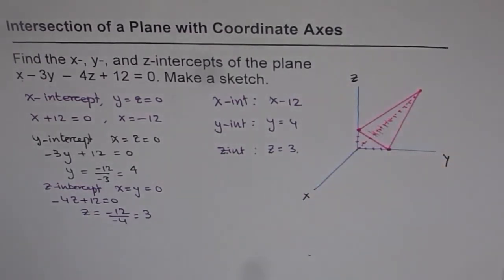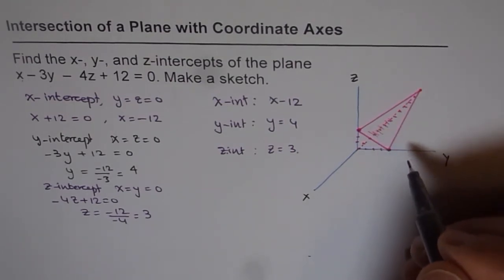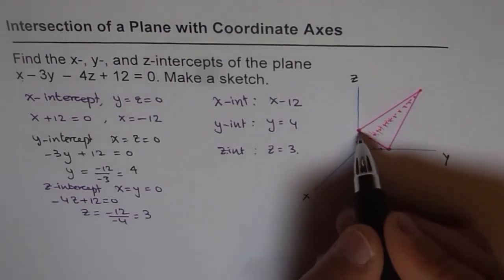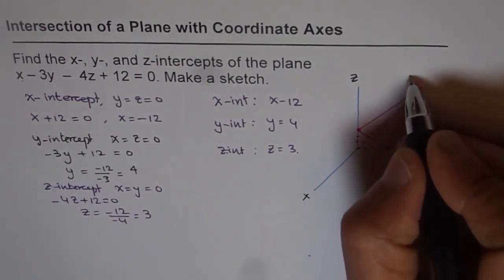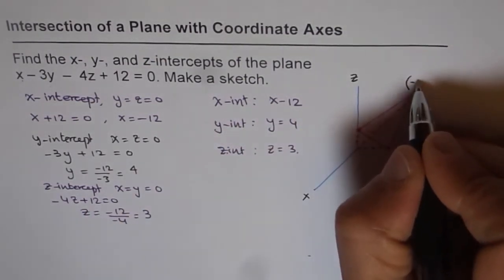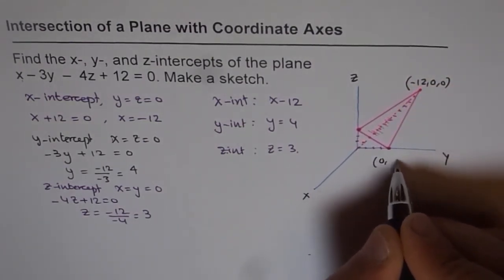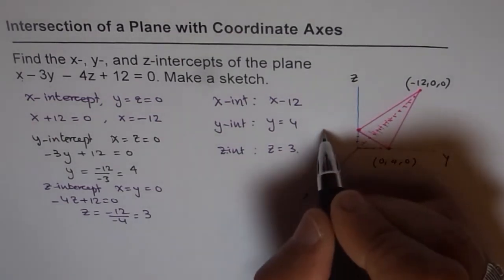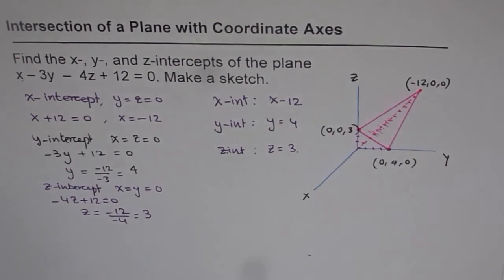A triangle represents a plane, and it extends as shown in the diagram in all possible directions. And the points which we have marked here are the x-intercept, minus 12, 0, 0, and that is the y-intercept, which is 0, 4, 0, and this one is the z-intercept, which is 0, 0, 3. So when you connect these three, it looks like a triangle, and that is the representation of a plane in such cases.